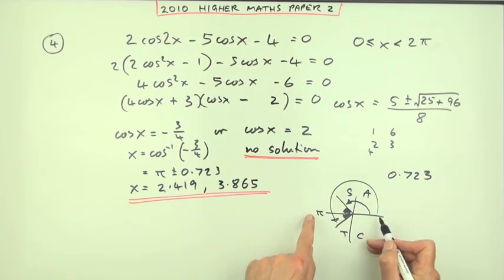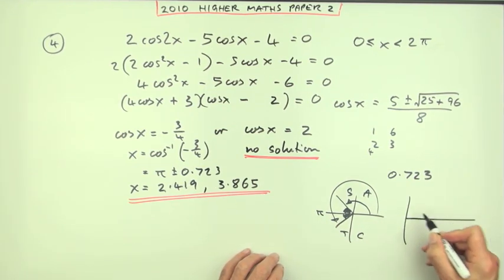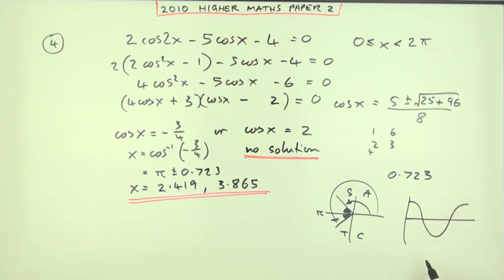The alternative to the cast diagram, of course, would be to consider the symmetry in the graph of the cosine. So, that's symmetrical about pi. And if this angle, 0.723, gives the answer negative 3 quarters, that means coming in 0.723 takes it to negative 3 quarters. Then going back and going forward would take it to the same point with the negative 3 quarters. So, again, it's pi plus or minus 0.723.